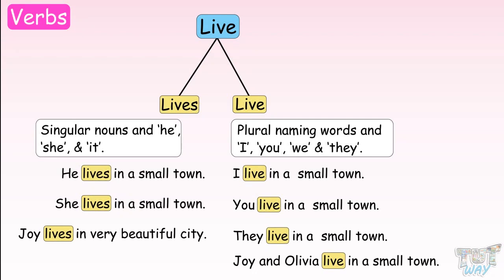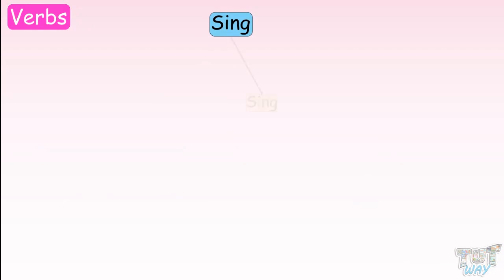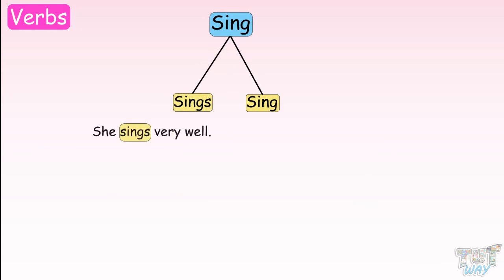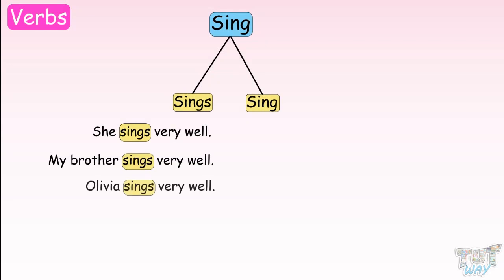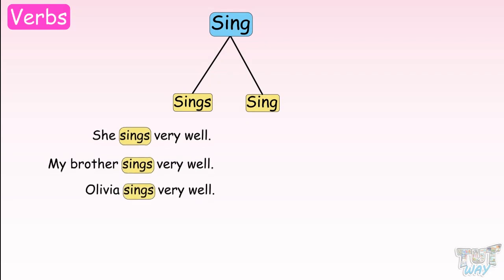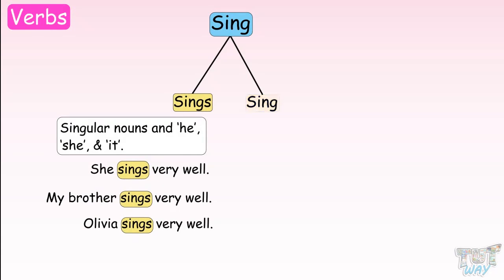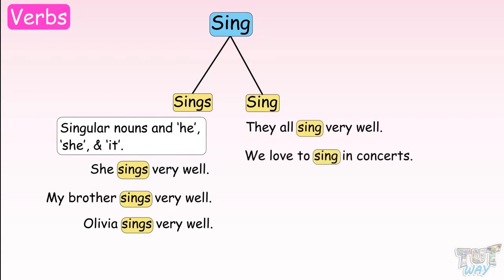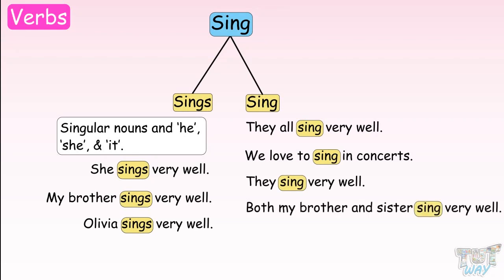Let's see some more examples. The verb sing has two forms: sing and sings. Where do we use sings? She sings very well. My brother sings very well. Olivia sings very well. Now let's learn about the usage of sing: They all sing very well. We love to sing in concerts. They sing very well. Both my brother and sister sing very well.